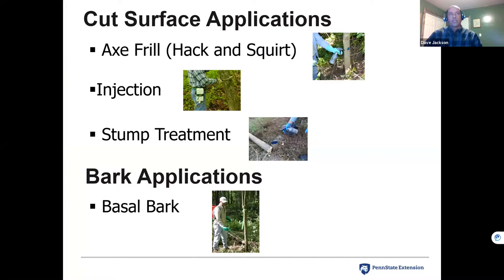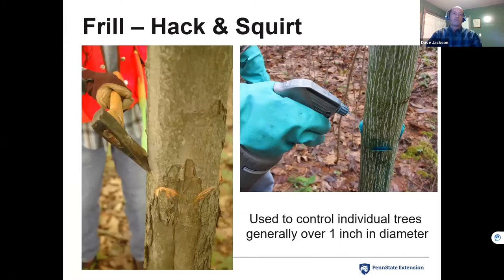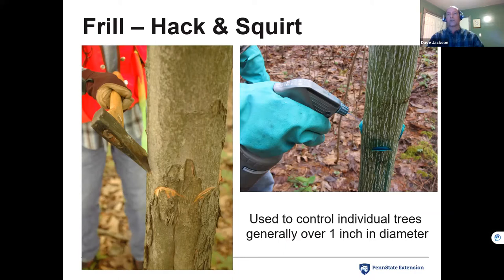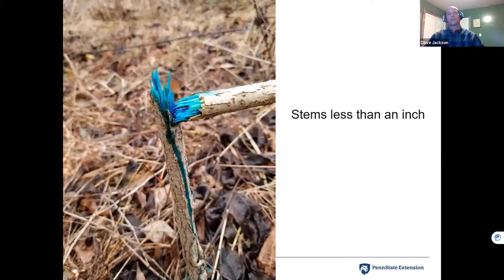Cut surface applications include the axe frill — more affectionately known as hack and squirt — injection, stump treatments, and basal bark. A frill is simply a downward angled cut made with a hatchet, with herbicide applied via a spray bottle — hence the name 'hack and squirt.' This technique is typically used to control individual trees generally over an inch in diameter. Fill the cuts until the herbicide is just coming out; if it's running down the stem, move on. For stems less than an inch, break them over or use the hatchet, leave some bark intact, and spray that cut surface.